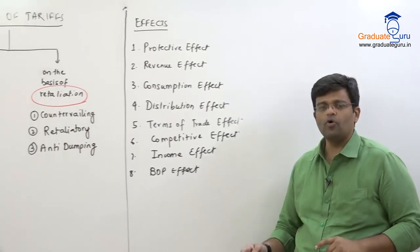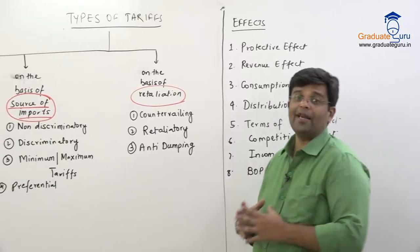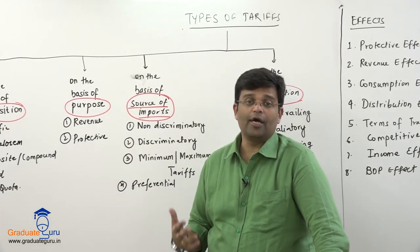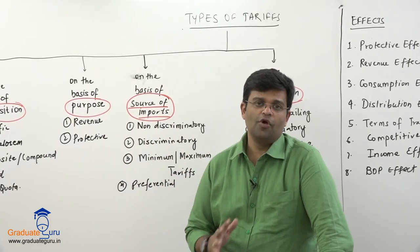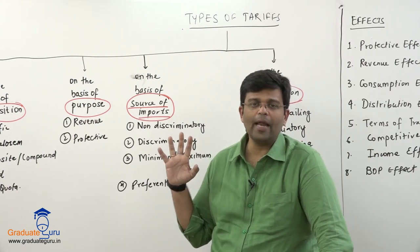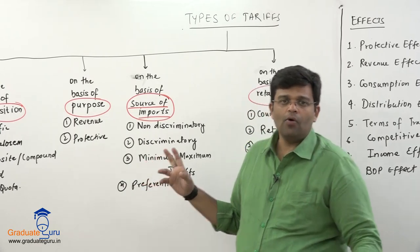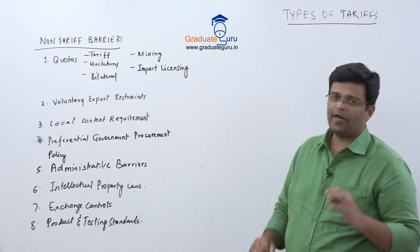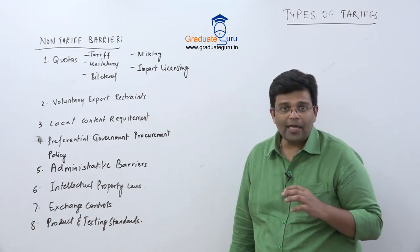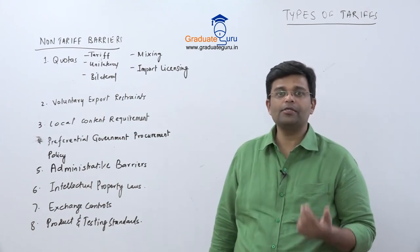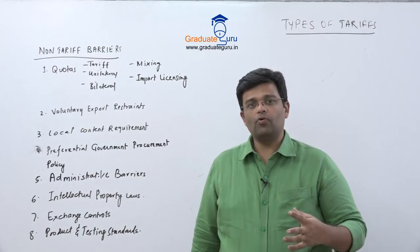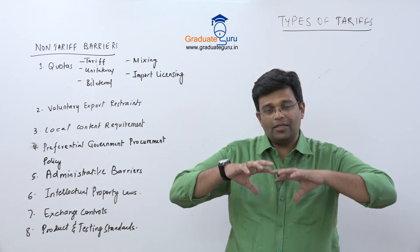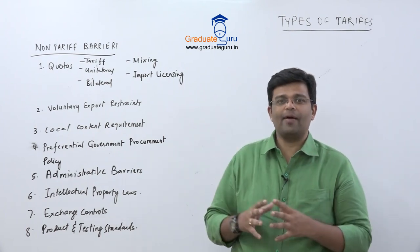Now let us move to non-tariff barriers. A non-tariff barrier means other than tariff — how the government tries to stop or reduce imports from coming into a country. After WTO came, all member organizations decided to reduce taxes, import duties, and tariffs and provide a level playing field. But many countries still apply non-tariff barriers to protect their domestic industries.